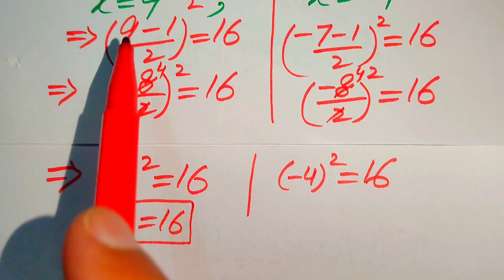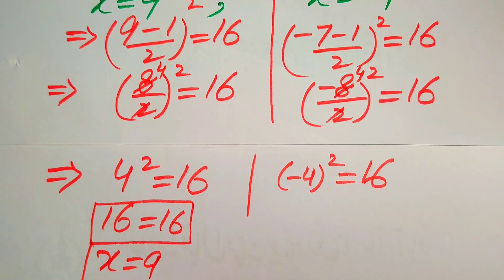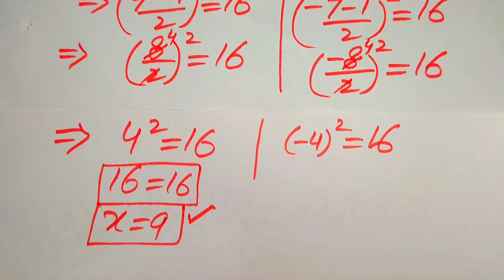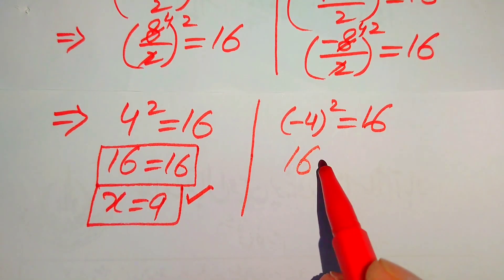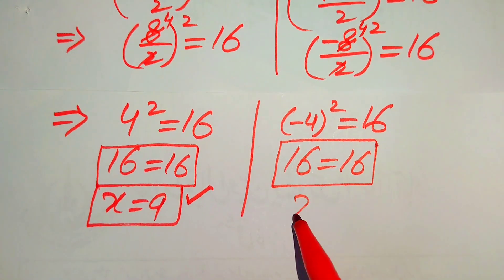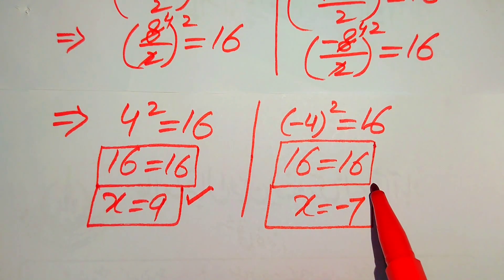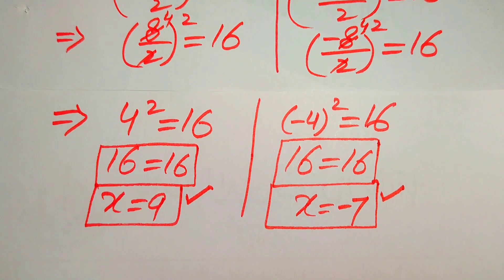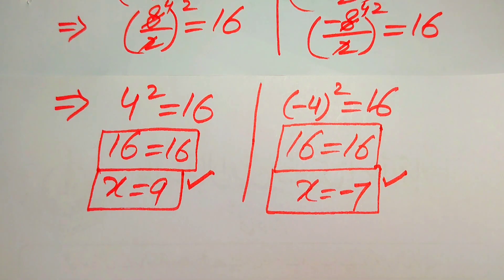4 squared equals 16 confirms x equals 9 satisfies the equation. Similarly, minus 4 squared also equals 16, confirming x equals minus 7 also satisfies the equation. So both values are solutions of the given equation, and this is the final answer. Thank you so much for watching. Please subscribe to my channel for more exciting videos.